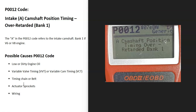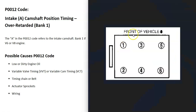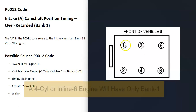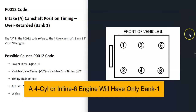The trouble will have to do with the intake side of the engine. Bank one is always the side of the engine with the number one cylinder, so if you find the number one cylinder, that's going to be bank one, and the opposite of that would be bank two.